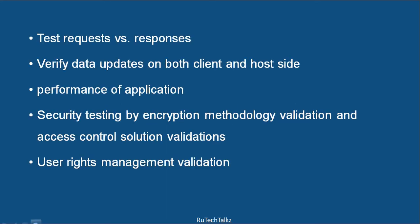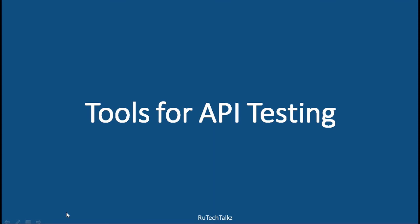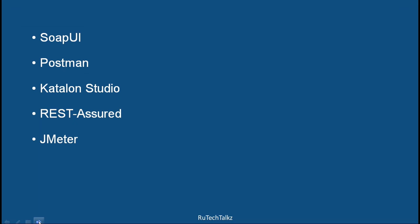What to test in APIs: One should test the request versus responses — analyze what the request was, what the output is, and whether the output meets expectations. Then verify data updates on both client and host side. We can also test the performance of the application using API testing. While performing API testing, we also perform security testing through encryption methodology validation, access control solution validation, and user rights management validation. Popular tools available to test APIs include SOAP UI, Postman, Katalon Studio, Rest Assured, and JMeter.